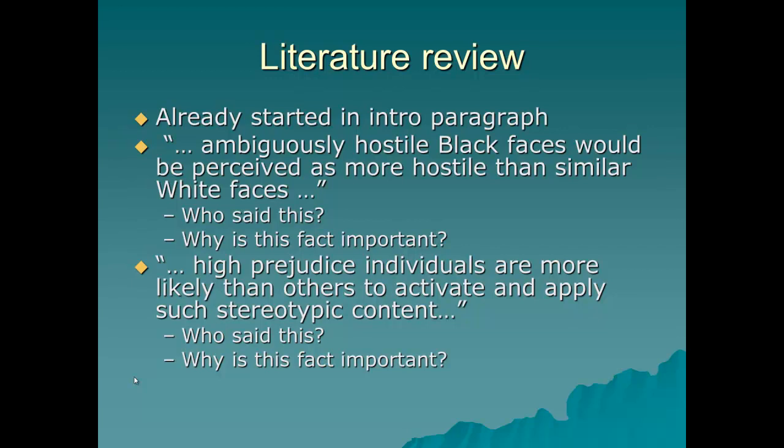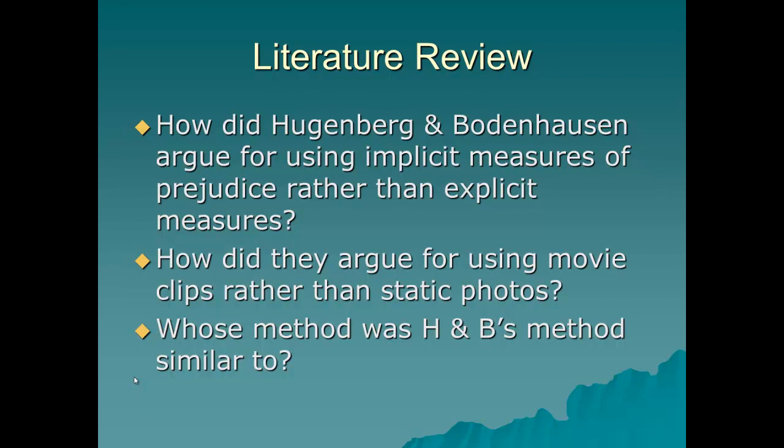Another quote: 'high prejudice individuals are more likely than others to activate and apply such stereotyped content.' Who said this? Why is this fact important? If you go and look at the introduction of Hugenberg's article, you're going to see that they cite previous research that demonstrated this, and they're also going to say exactly why this fact is important for his paper. Other things you may want to go back and look at: How did Hugenberg and Bodenhausen argue for using implicit measures of prejudice rather than explicit measures? How did they argue for using movie clips rather than static photos? And whose methods were their methods similar to? Go back and take a look and you'll find all these answers in their literature review.